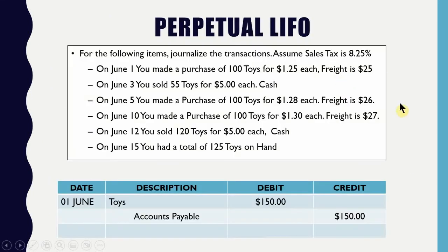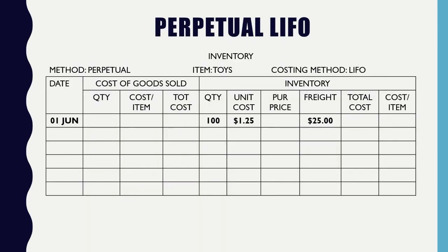Let's take a look at an example. On June 1st, you made a purchase of 100 toys at $1.25 with a freight of $25. You're going to plug that into your inventory worksheet. 100 at $1.25 gives you $1.25, plus $25 gives you $1.50. And because we're using LIFO, we need to keep our batches of inventory separate — so that's at $1.50.